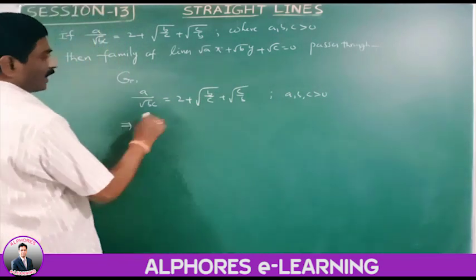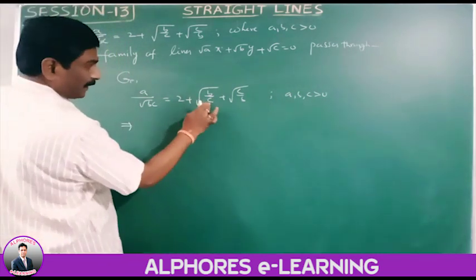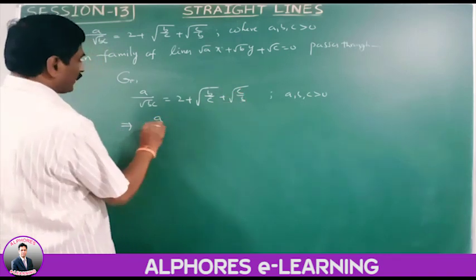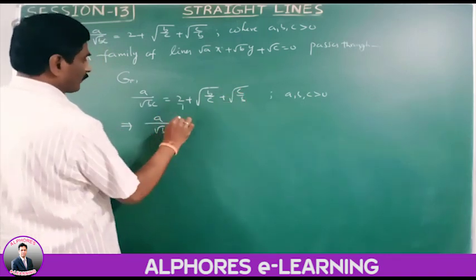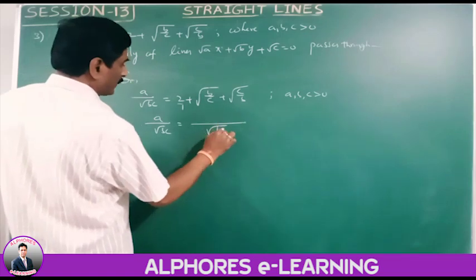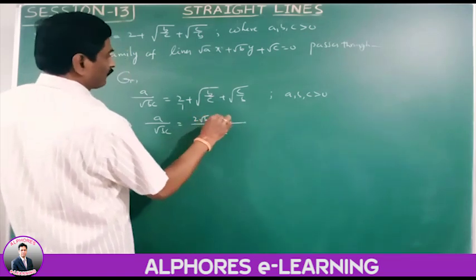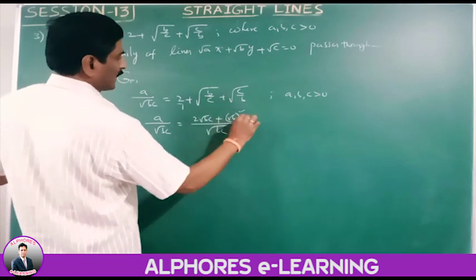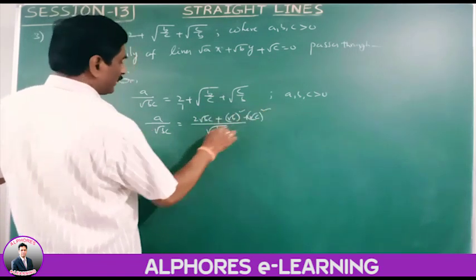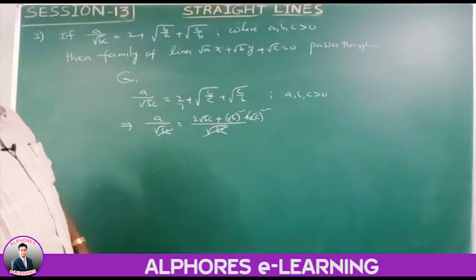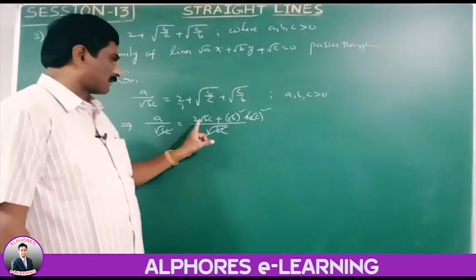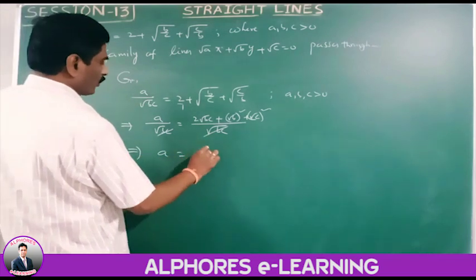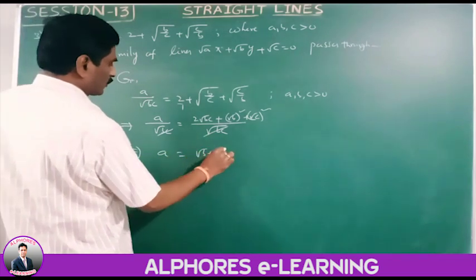Here a, b, c are positive values. Taking the LCM (which is root(bc)), the right side becomes [2·root(bc) plus root(b)·root(b) plus root(c)·root(c)] divided by root(bc). After canceling denominators, we get a equals (root(b) plus root(c)) squared using the identity a²+b²+2ab = (a+b)².